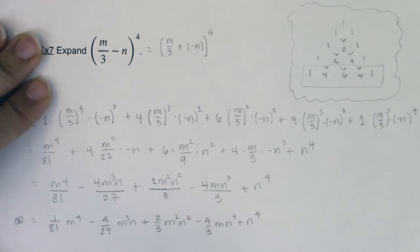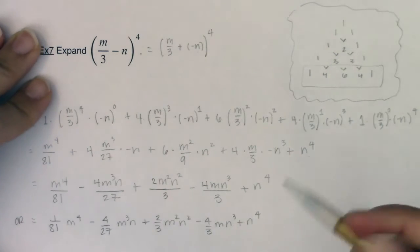All right, and let's just check. Did the powers of m descend? So we had 4 3 2 1 0. Great. How about n? n was 0 1 2 3 4. So great. So I've got my binomial expansion.